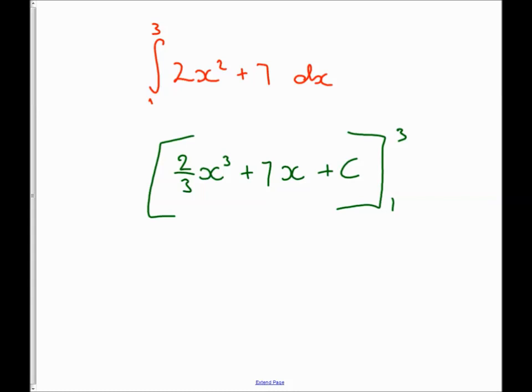So the second stage of integration with limits is writing it in an integrated form with square brackets. We write our limits, instead of on the left-hand side with the integral sign, we're going to write them on the right-hand side by our brackets.